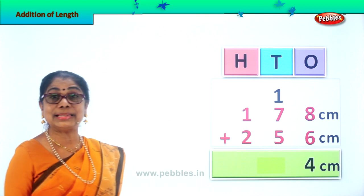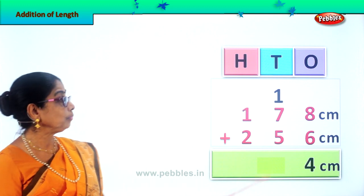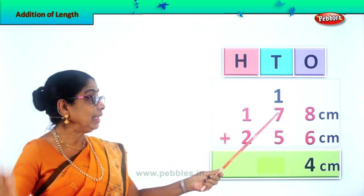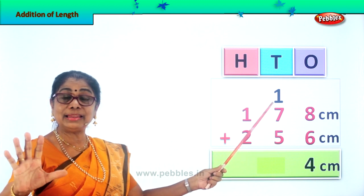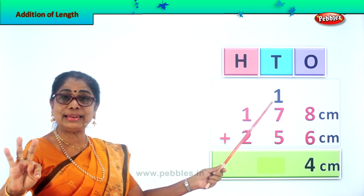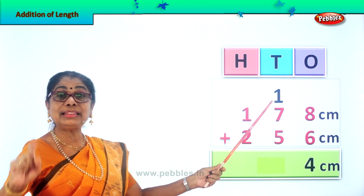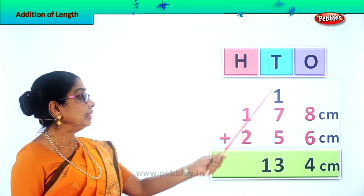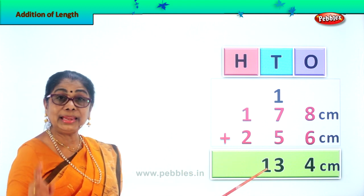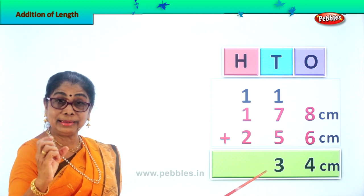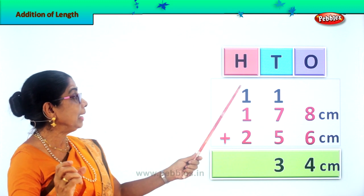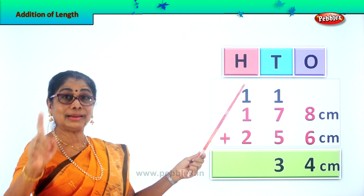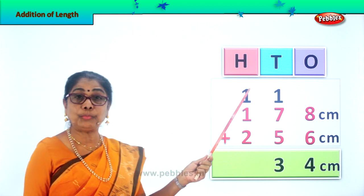Now we add up all that is in the 10's place. 1 plus 7 is 8. 8 plus 5 is 13. We put 3 in the 10's place. We take this 1 ten and put it in the 100's place. 10 tens are 100, so the 1 from here we take and put in the 100's place.